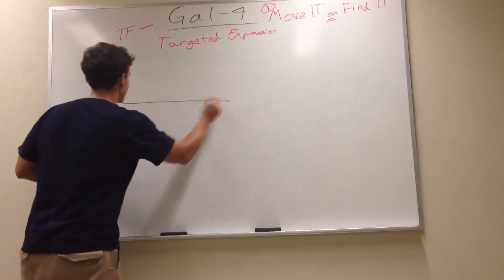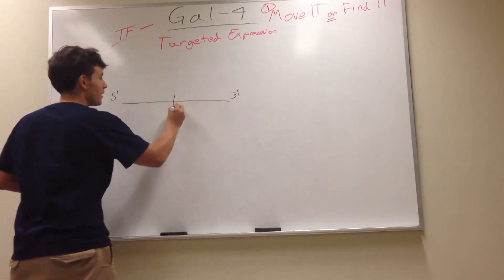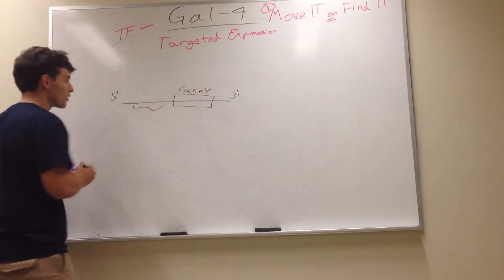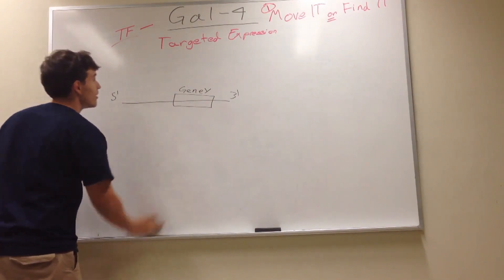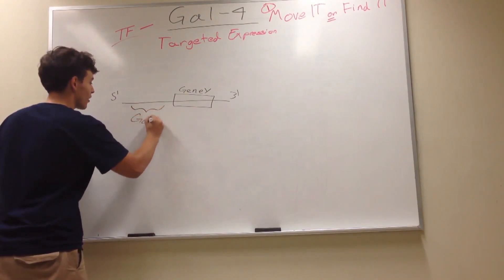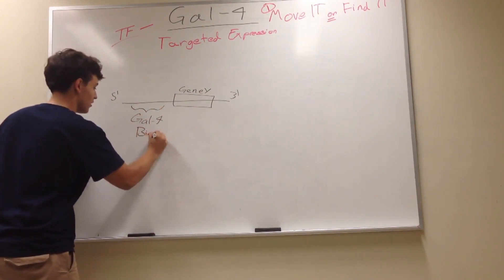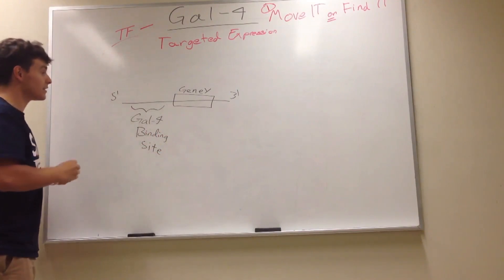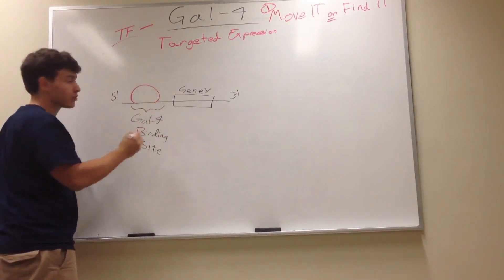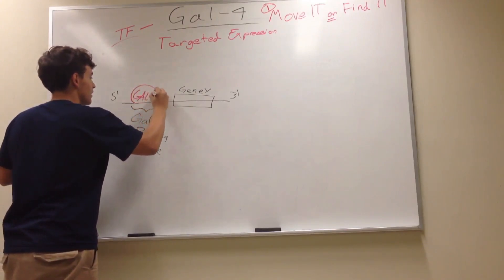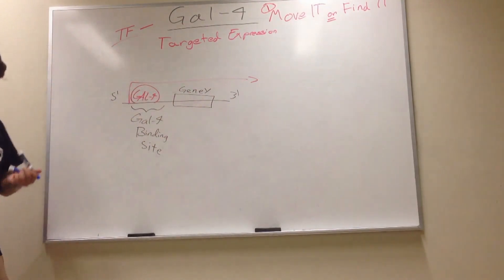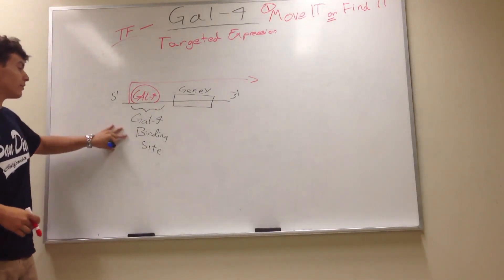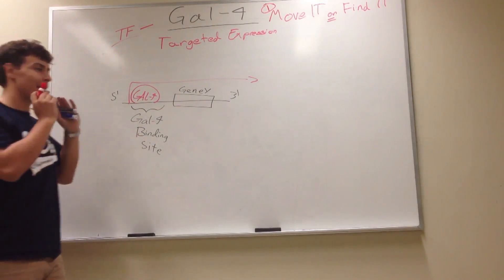Let's say we have a gene — five prime, three prime as always — and we have gene X. If there is a promoter or enhancer region that GAL4 can bind to, a GAL4 binding site, whenever the protein transcription factor GAL4 is present, it will come and do exactly what a transcription factor does: it will promote transcription of downstream gene X. The basic concept is that it can bind to any site that has a GAL4 binding site and push its expression.